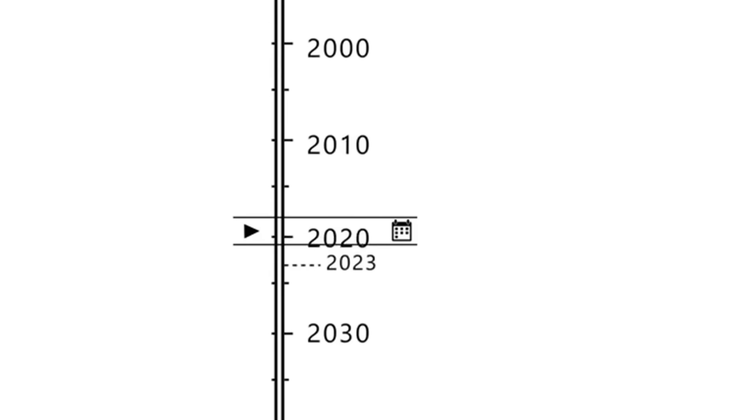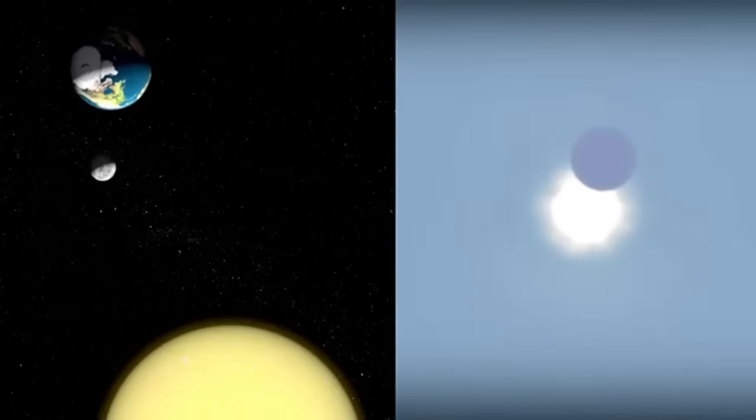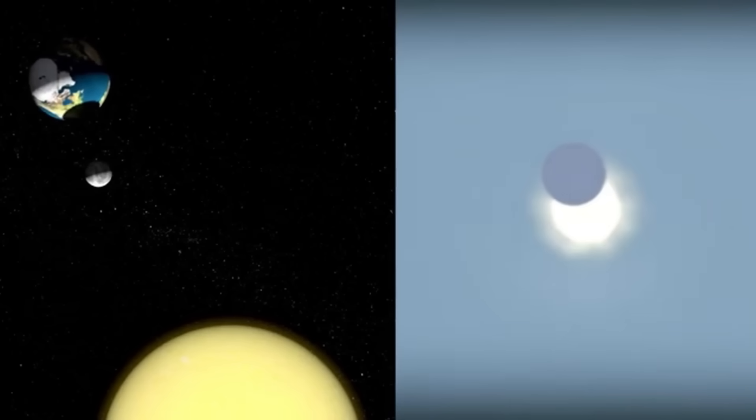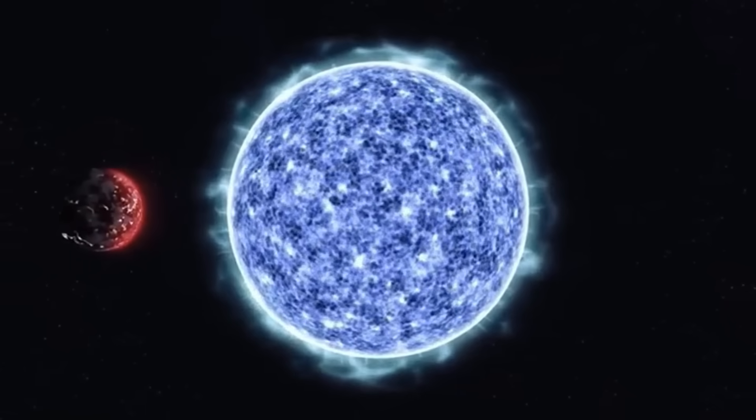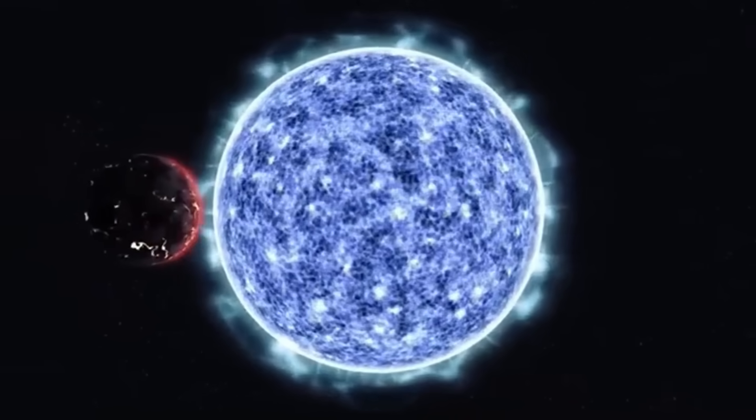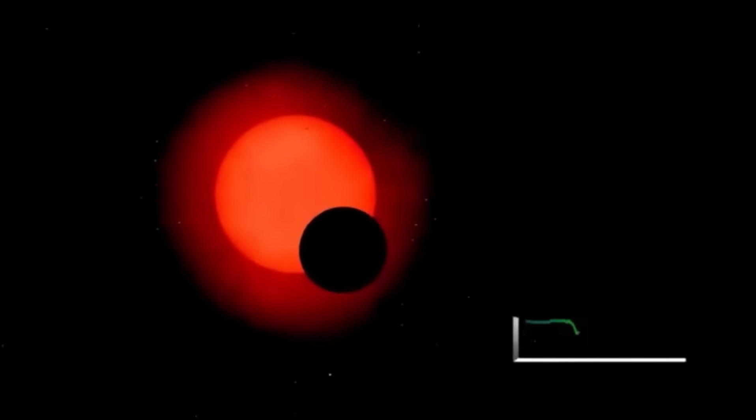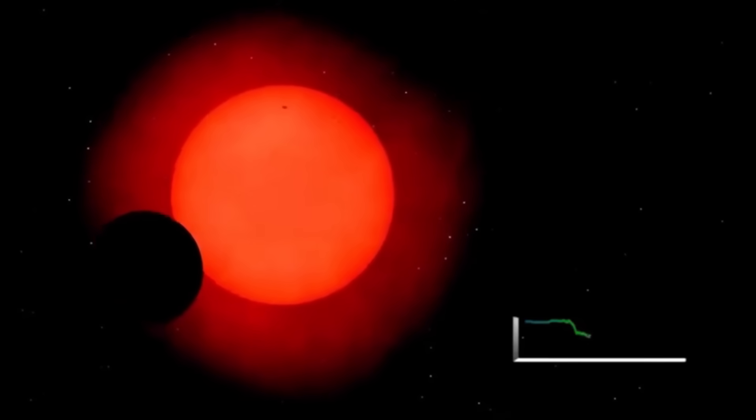It may seem young by human standards, but in stellar terms, it is ancient. Stars like Betelgeuse have short lifespans compared to smaller stars like our sun, and its current phase represents the final stages of its existence. It has undergone a radical transformation from a hot blue star to the cooler red supergiant we observe today. As it burns through its nuclear fuel, Betelgeuse is gradually losing mass and undergoing immense changes within its core.